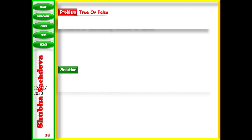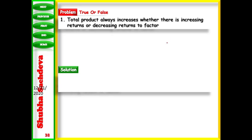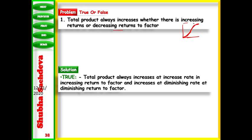Next: total product always increases whether there are increasing returns or decreasing returns to a factor. Yes, this is true. When there are increasing returns, TP increases at an increasing rate (upward concave). In diminishing returns, TP also increases but at a diminishing rate (downward concave). So TP always increases in both stages.